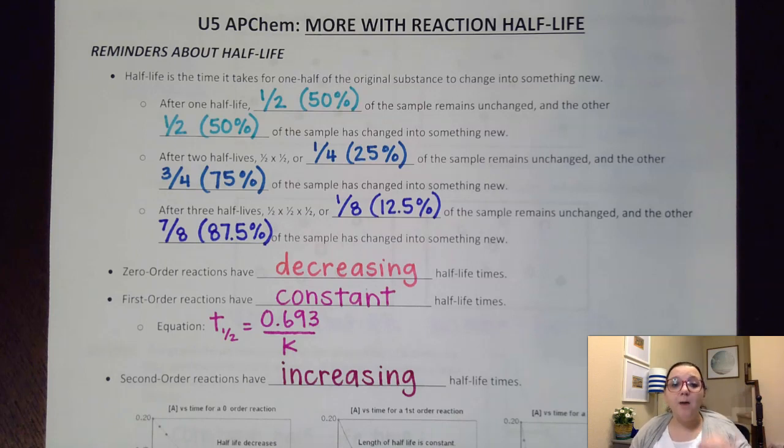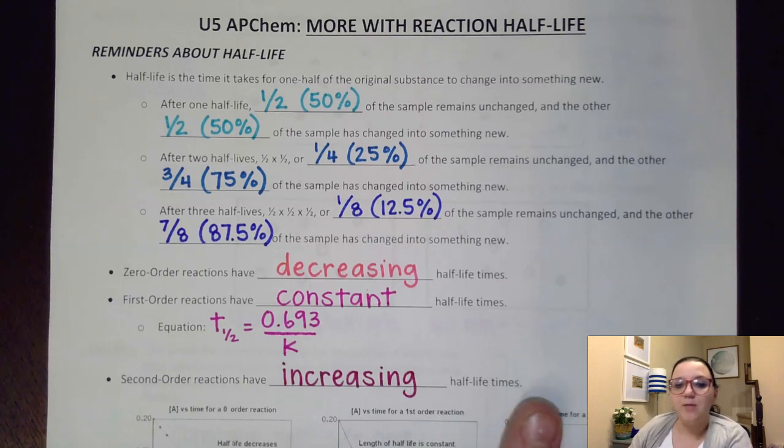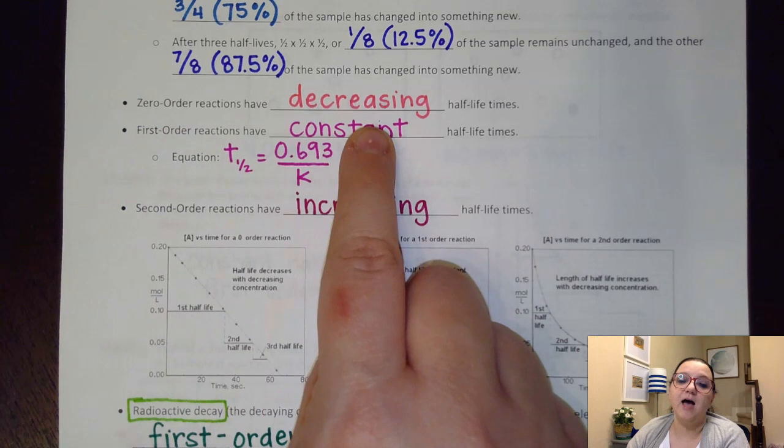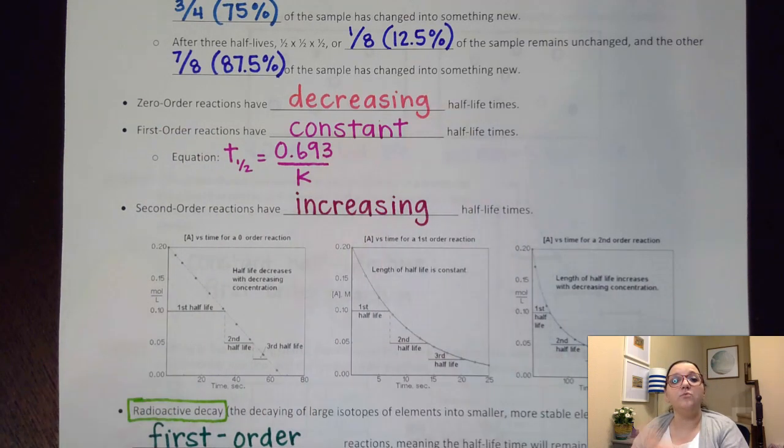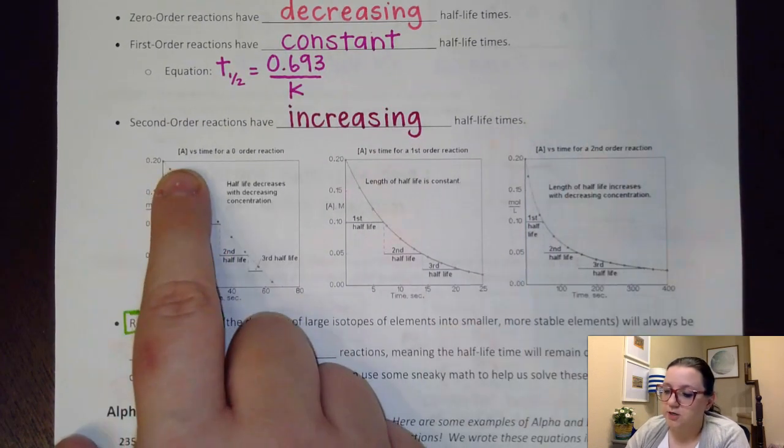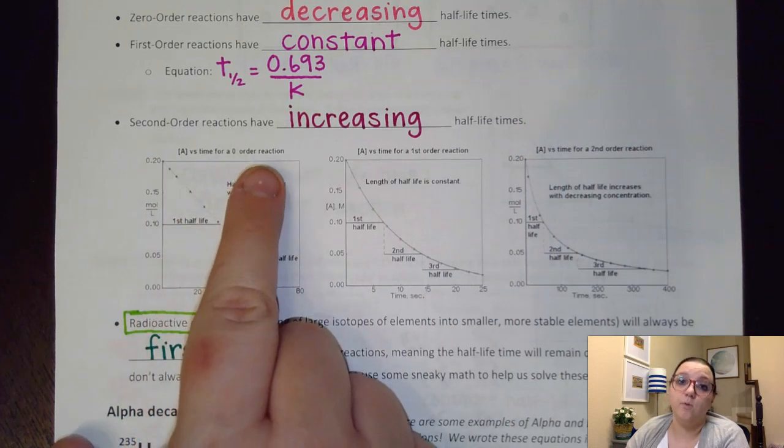And so over time, that amount of product that you have is going to increase tremendously, and the amount of reactant that you have is going to decrease tremendously. So the biggest implication with half-life deals with our orders, kind of a throwback to our previous video. And that is the fact that if I have a zero-order reaction, that they have decreasing half-life times. What that means is as the reaction progresses, the time it takes to cut in half gets shorter and shorter. And we see that here on this particular graph. This is a concentration versus time graph for a zero-order reaction.